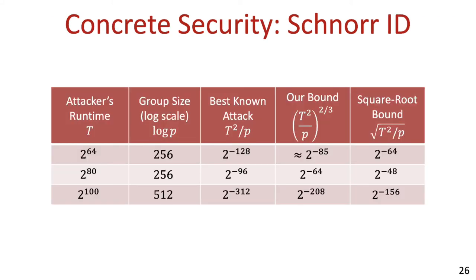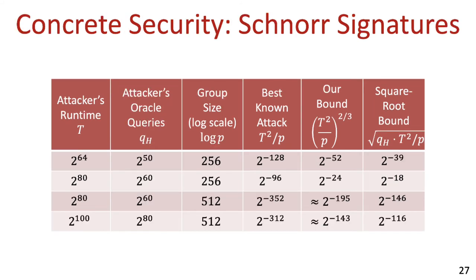Just to give you some sense of how much our result improves upon the square root bound, you can find some concrete examples on the slide for the case of Schnorr's ID scheme. For example, if the group is of size 256 bits and the attacker runs in time 2^64, our bound is better by a multiplicative factor of roughly 2^21. For Schnorr's signatures, if the attacker also makes 2^50 random oracle queries, our bound is better by a factor of roughly 2^13.